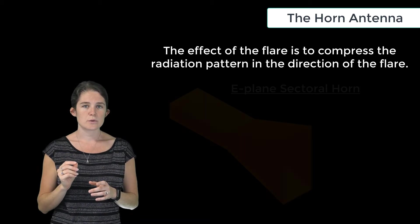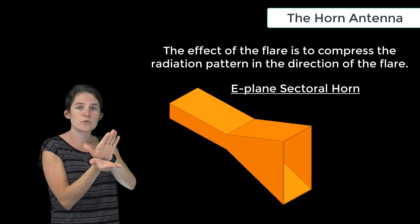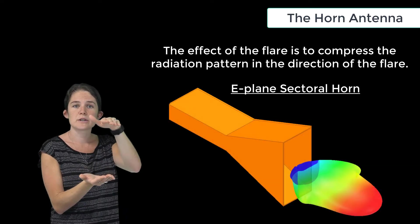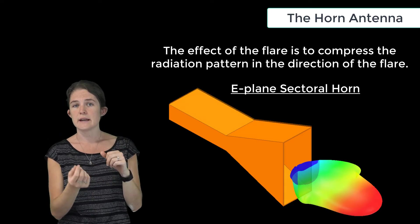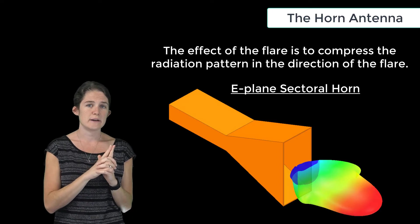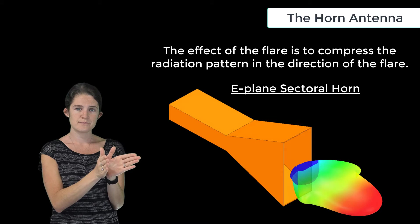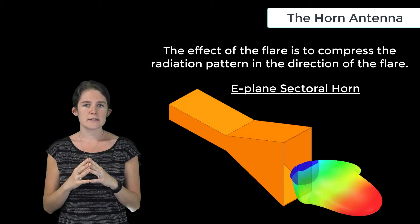An E-plane sectoral horn like this one, which flares in the vertical direction, will have a radiation pattern that is more tightly constrained in the vertical direction than an antenna without the flare would be. You'll note, though, that the radiation pattern in this case has rather a wide beam width in the horizontal direction.